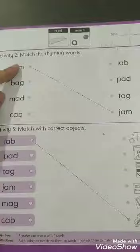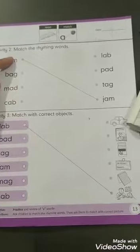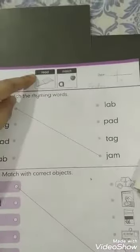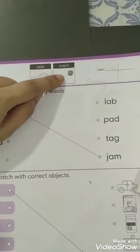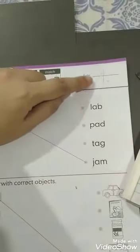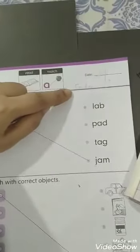Now we will do next page, page number 13. Here are two icons - Read and match. Read kareenge aaj hum yahan pe or matching kareenge. Then we will write date and day.